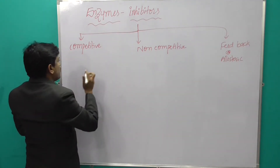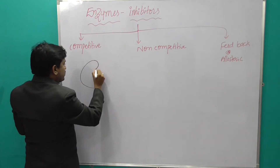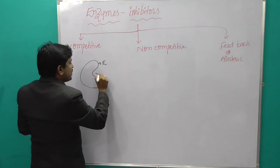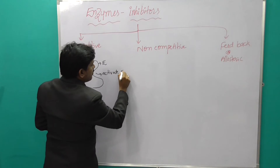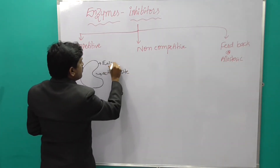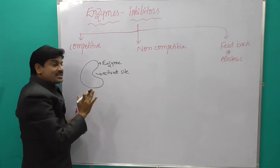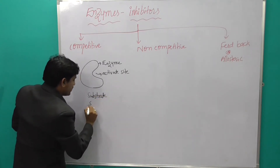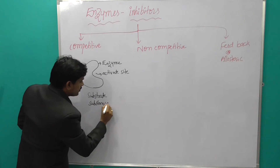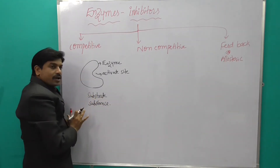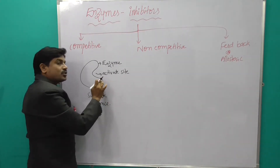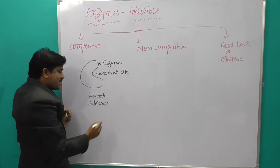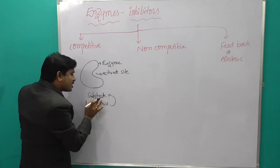I am drawing a diagram. This is an enzyme, and the enzyme has an active site. The enzyme is like an engine — the active site binds the substrate. In competitive inhibitors, the inhibitor substance has a similar structure to the substrate.